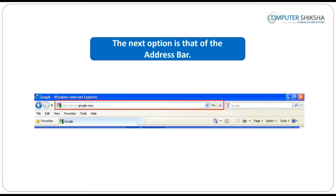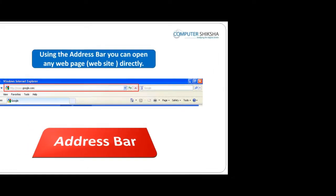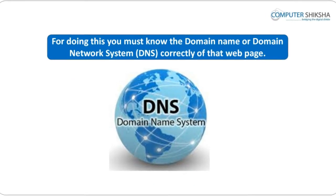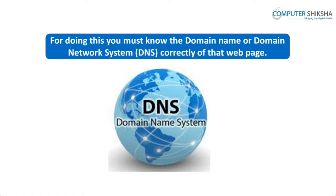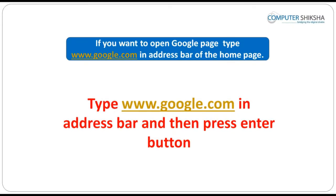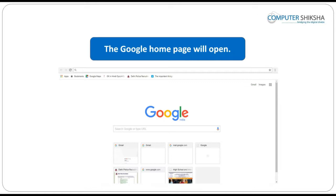The next option is that of the address bar. Using the address bar, you can open any web page or website directly. For doing this, you must know the domain name or DNS correctly of that web page. You need to type that address in the address bar to reach the desired page. For example, if you want to get to the Google home page, you will type www.google.com and press the enter button, and the Google home page will open.